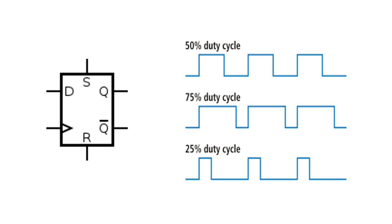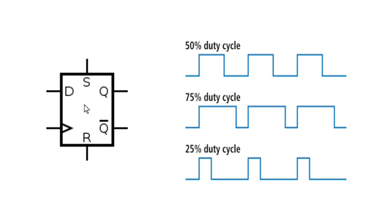A flip-flop cannot work on a clock with any arbitrary duty cycle, because the flip-flop demands that logic high inside the clock signal must remain for some minimum time. Similarly, logic 0 must also remain for some minimum time. Only then will the flip-flop work properly — otherwise it can go to a metastable state. In the subsequent part of the video we will discuss why a flip-flop requires logic high and logic 0 each for some minimum time.